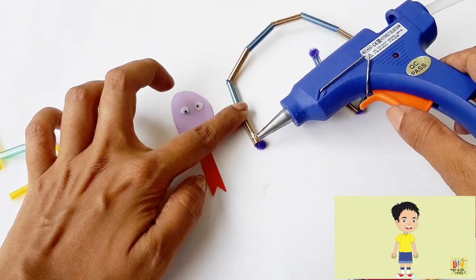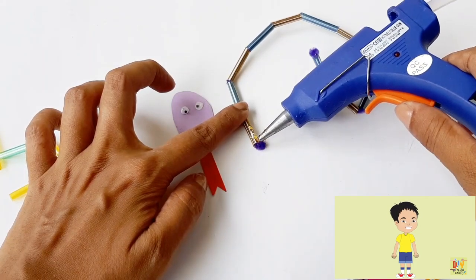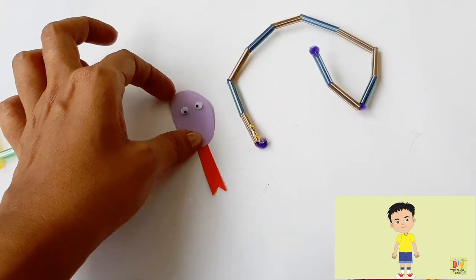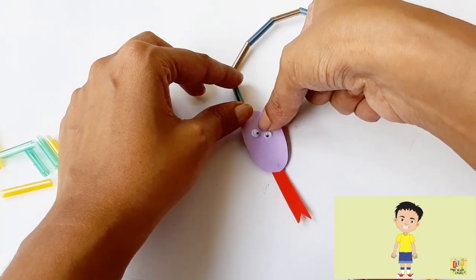When using a glue gun, have an adult assist you. Then place the head on our snake.